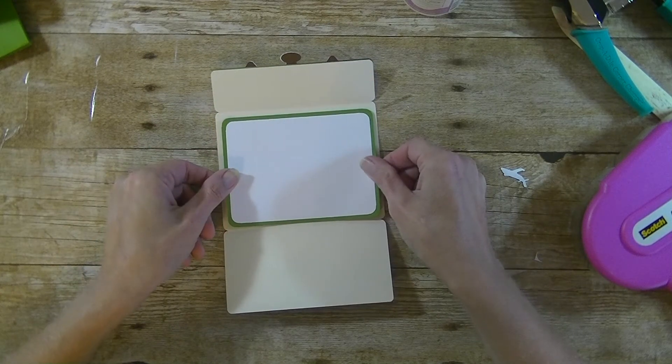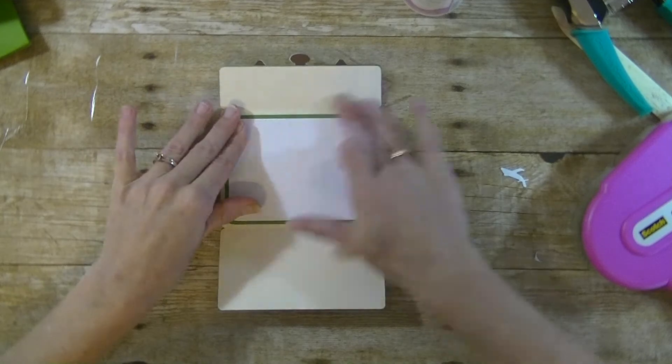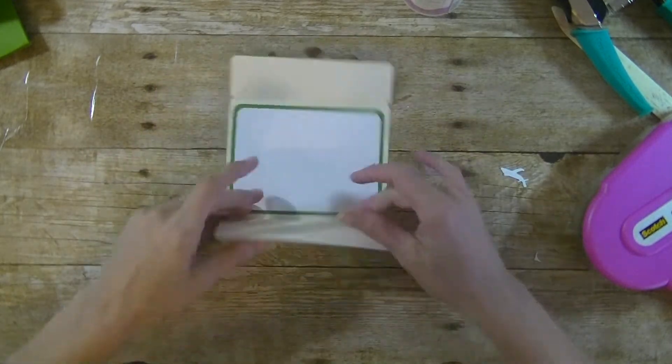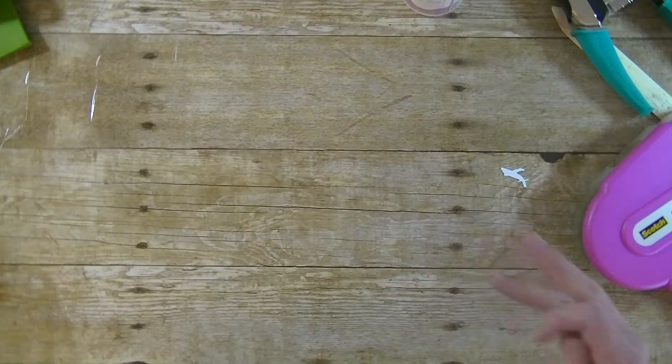Let's glue this guy down. Let's go ahead and plop that in the middle. It's a little bit bigger than your normal quarter inch border, but I think it looks okay. So there's our card. Let's work on the envelope.